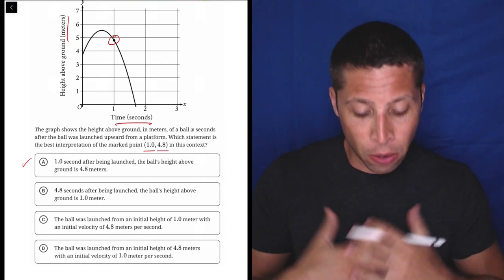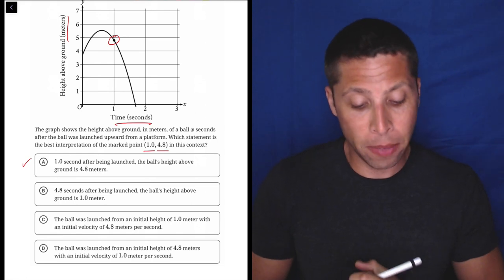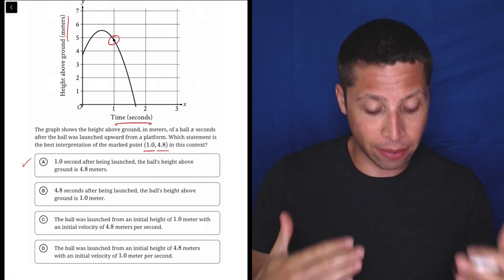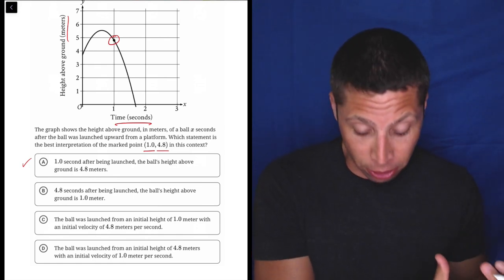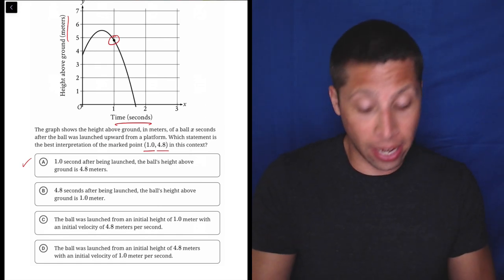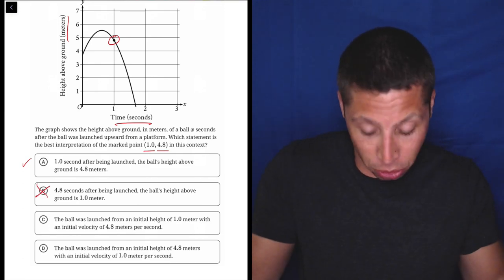Let's of course look at the other choices. 4.8 seconds after being launched, the ball's height above ground is one meter. Well, no, that's flipping them, right? The 4.8 is the Y coordinate. The Y unit is meters. So why are we saying now 4.8 seconds, right? That's flipping the story.